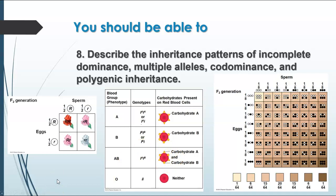Polygenic inheritance means you have multiple genes coding for the same trait — things like skin color, hair color, eye color, and height. There are multiple genes that code for these traits, and basically what you get is the result of the additive effect of all the recessive or dominant alleles you have. In the case of skin color, the more recessive alleles you have, the lighter the skin tone, and the more dominant alleles you have, the darker your skin tone. Individuals with the same number of dominant or recessive alleles, even if they're on different genes, would have the same phenotype, even though their genotype might be slightly different.